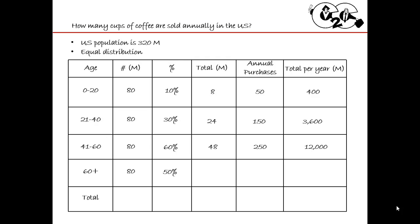Last group, 60 plus: 80 million people, 50% of them gives me 40 million. They don't drink much coffee anymore — I'll say they're making about 100 purchases per year. So 40 times 100 gives me 4,000. Now I'll add it all up: 400 plus 3,600 gives me 4,000; 4,000 plus 12,000 gives me 16,000; 16,000 plus the remaining 4,000 gives me 20,000. Circle this number — put it in your interviewer's mind that you got to this final answer.